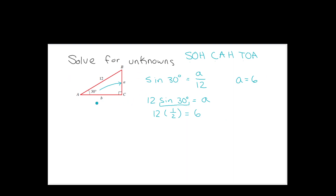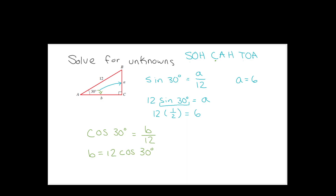Now we need b. We can use Pythagorean theorem or another trig function. I'll use cosine for the practice — cosine of 30 degrees equals the adjacent side b over the hypotenuse 12. You also could have used tangent with the 6 you already found over b. We're going to solve for b: multiply 12 over to get b = 12 times cosine of 30.